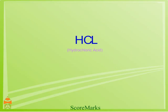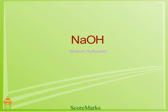An acid has a chemical formula with H at the beginning of it — for example, HCl, hydrochloric acid. There is one exception to this rule: CH3COOH is acetic acid, vinegar. A base has a chemical formula with OH at the end of it — for example, NaOH, sodium hydroxide.